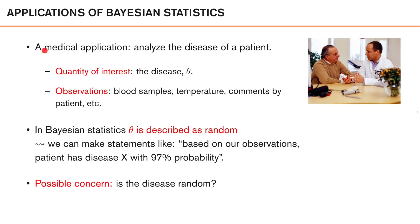To make things a bit more concrete, let's look at using Bayesian statistics in a medical application. Let's say that we want to analyze the disease of a patient. The quantity of interest that we want to apply Bayesian statistics to and try to make a decision on is the disease of the patient. Let's denote the variable that describes the disease as theta. To help us make decisions regarding the disease of the patient, we make some observations — collecting and analyzing blood samples, taking the temperature of the patient, collecting comments by the patient on experienced symptoms, and so on. In many cases, not one of these alone will give us the conclusive answer, but if we weigh them together, the picture usually becomes a bit clearer, and we can use Bayesian statistics to do this.